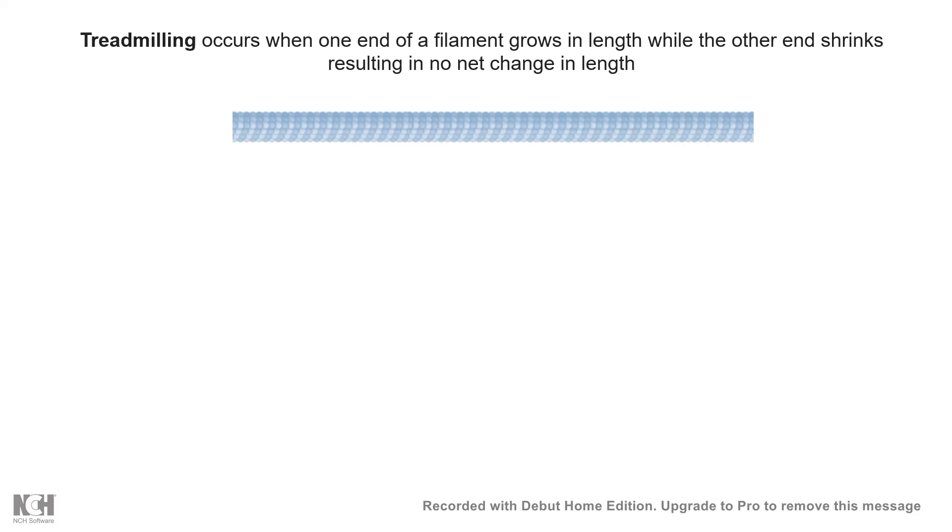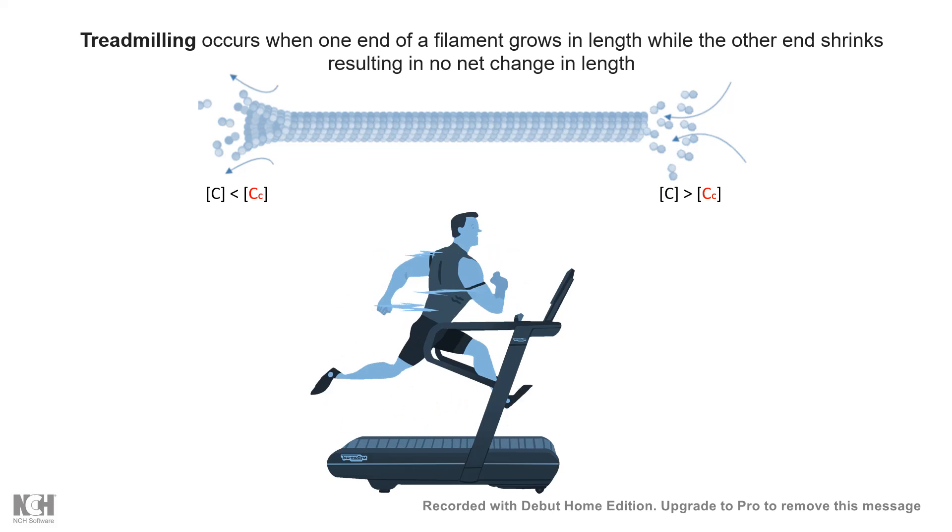Now treadmilling can only occur when at one end of the microtubule filament, the concentration of tubulin is less than the critical concentration and other side the concentration is higher than the critical concentration. If you understand the video so far, you would understand then at one end there would be polymerization and other end there would be depolymerization. And as a result, if the rate of polymerization and depolymerization kind of equalize, then there would be no net increase in the length, but as a result it looks like the microtubule is making a treadmill like movement. So this kind of specific movement is known as treadmilling.